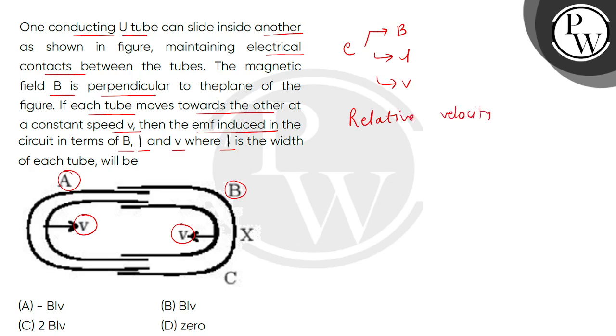The relative velocity of tube A with respect to B - in this condition, the velocities will add. It will be twice of v.